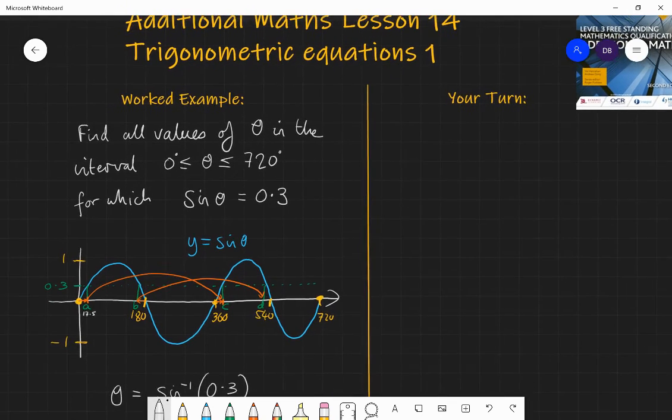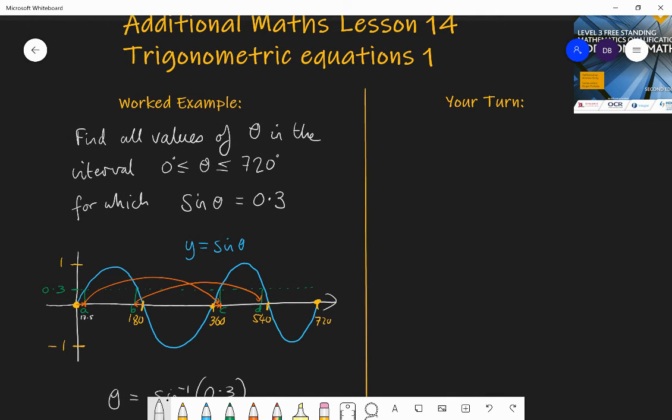So I want you to have a go now. Could you find all the values of theta in the region 0 to theta is less than or equal to 720, for which sine of theta is equal to 0.4. So pause the video, have a go, find all the solutions, make sure you have drawn a graph. It will help you. And I will go through the answer in a second.